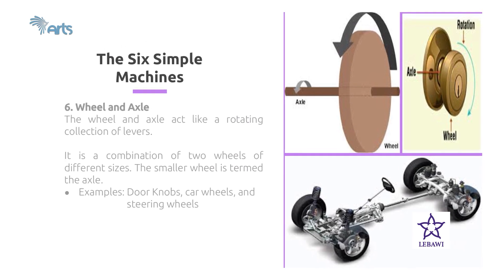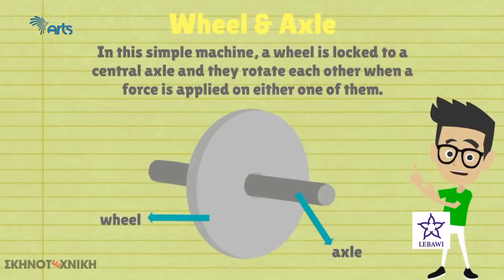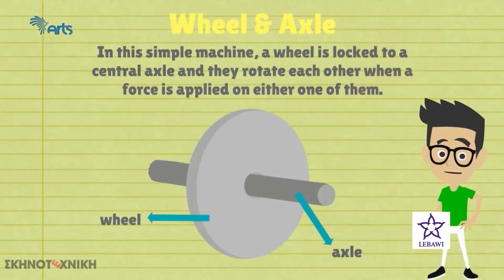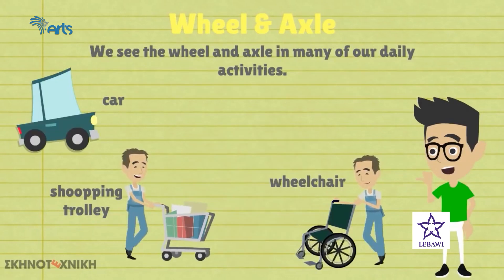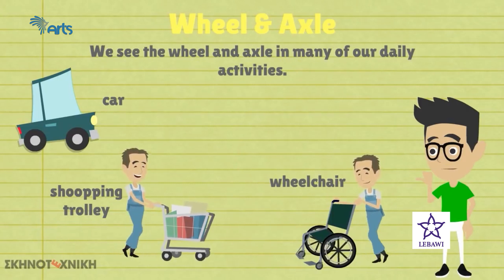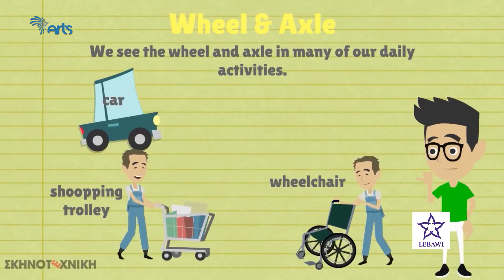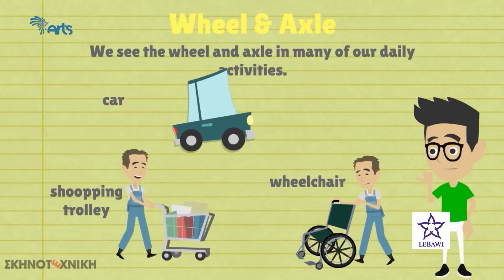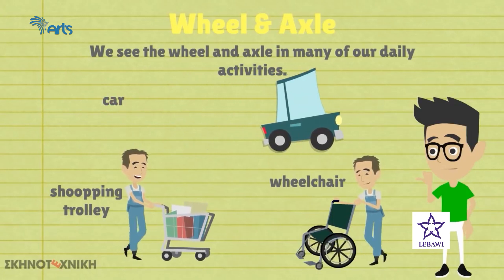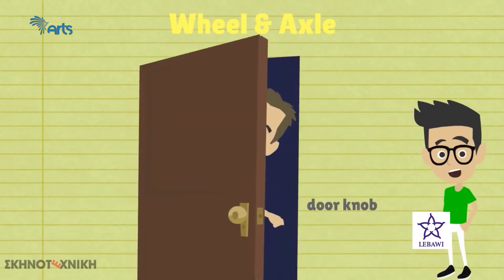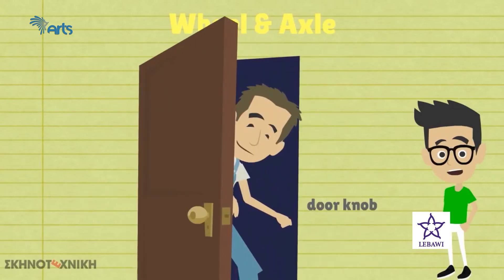The sixth simple machine is the wheel and axle. The wheel and axle act like a rotating collection of levers. It is a combination of two wheels of different sizes — the smaller one is the axle and the bigger one is called the wheel. Door knobs, car wheels, and steering wheels are examples of wheel and axle.